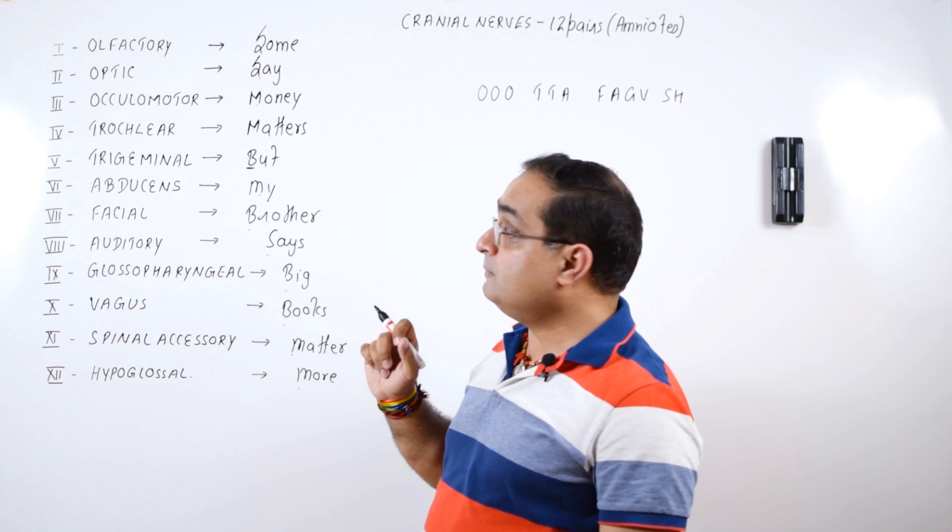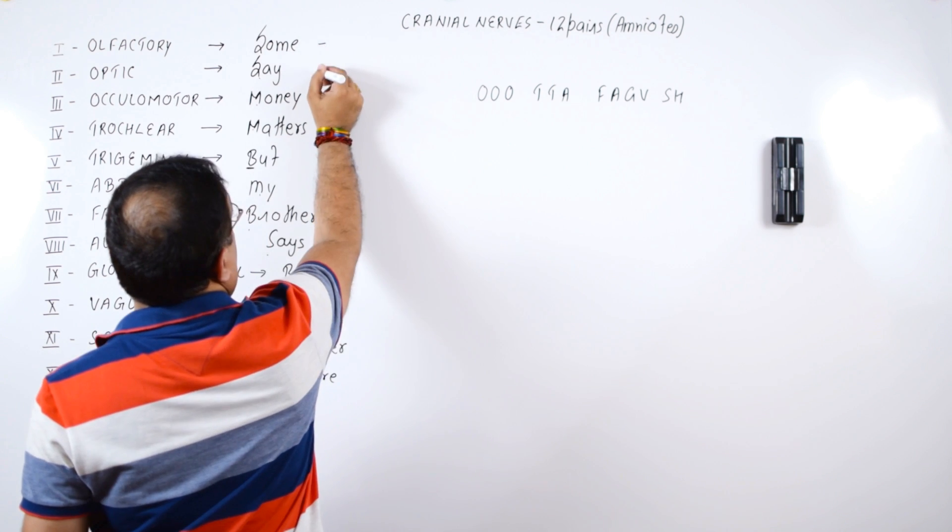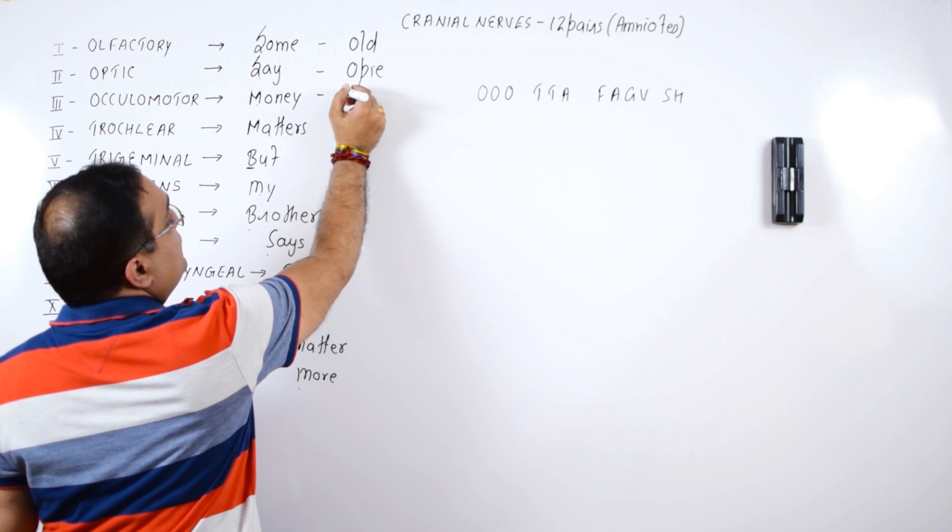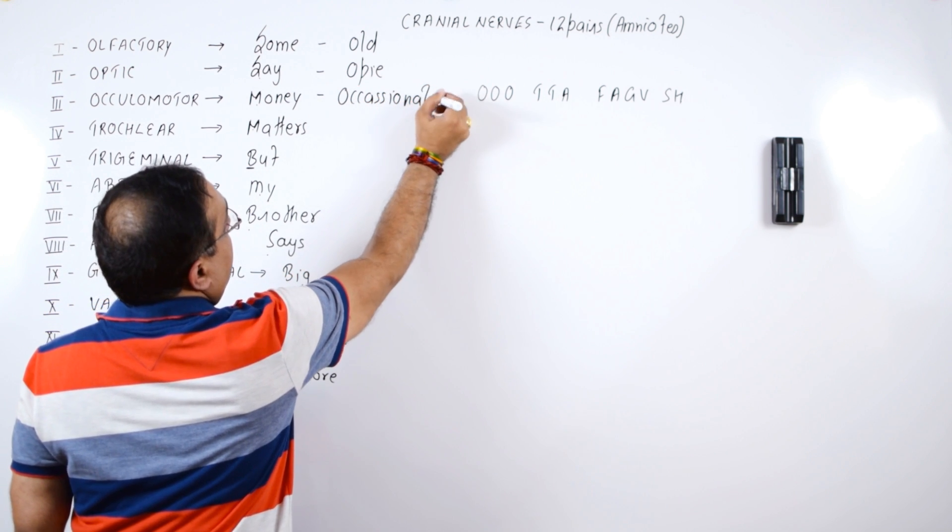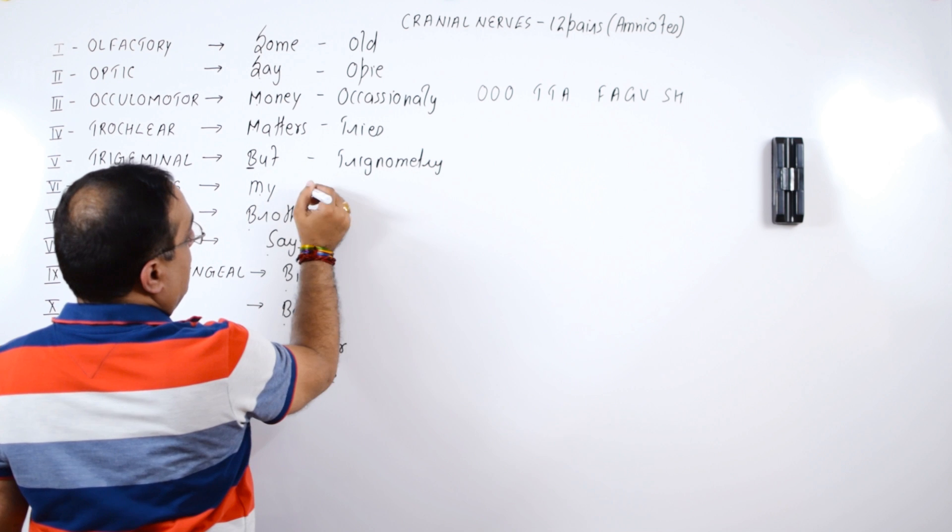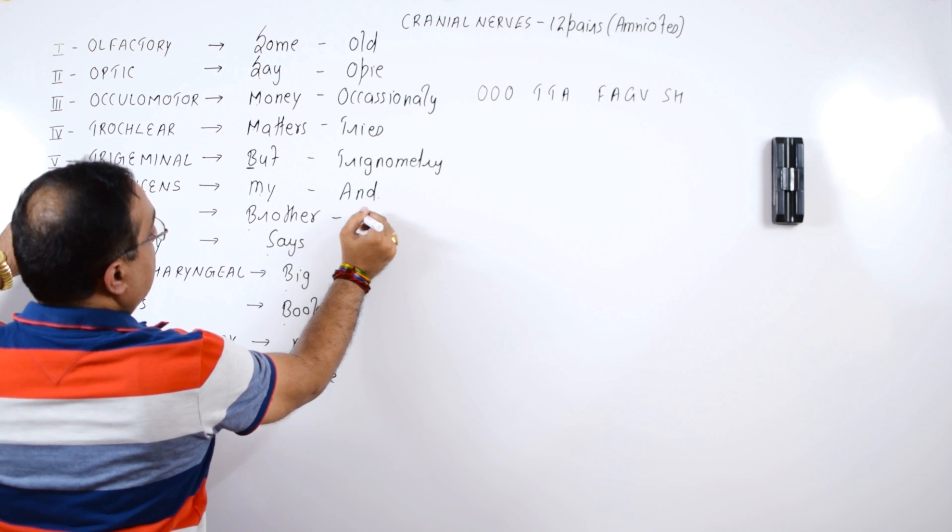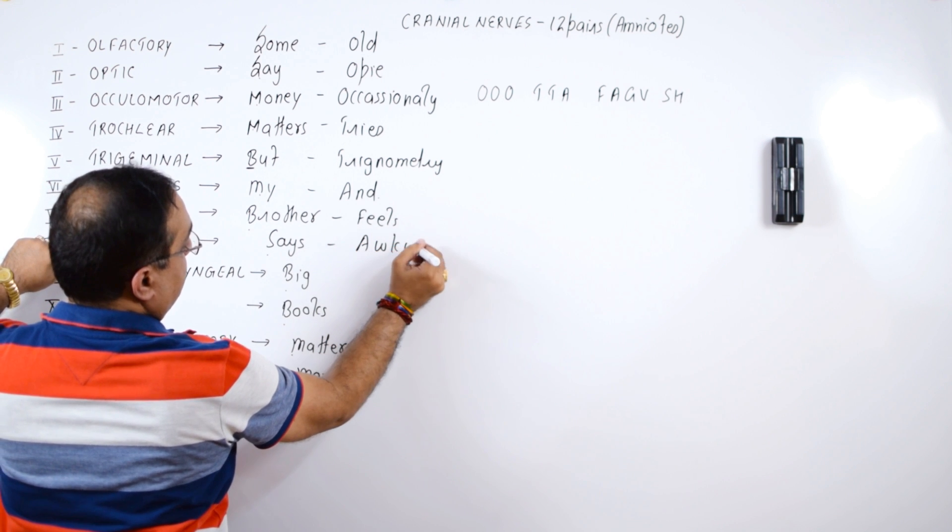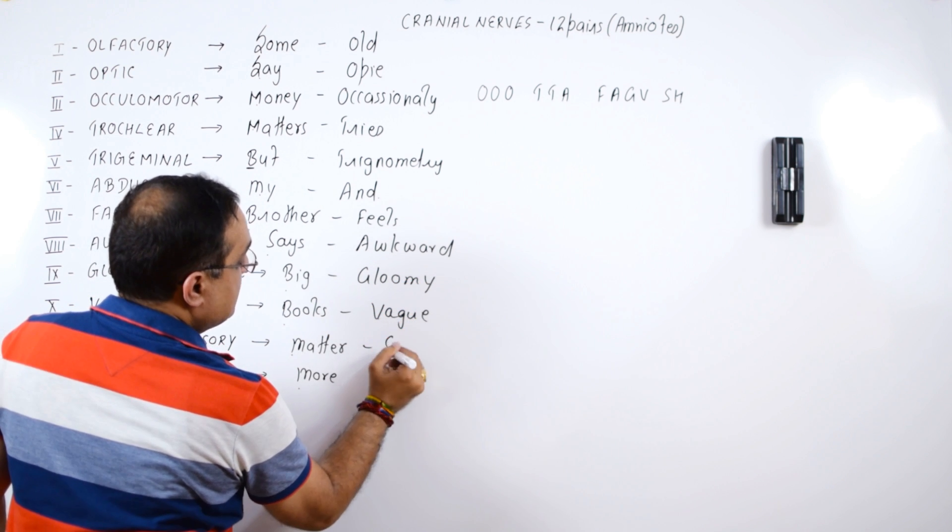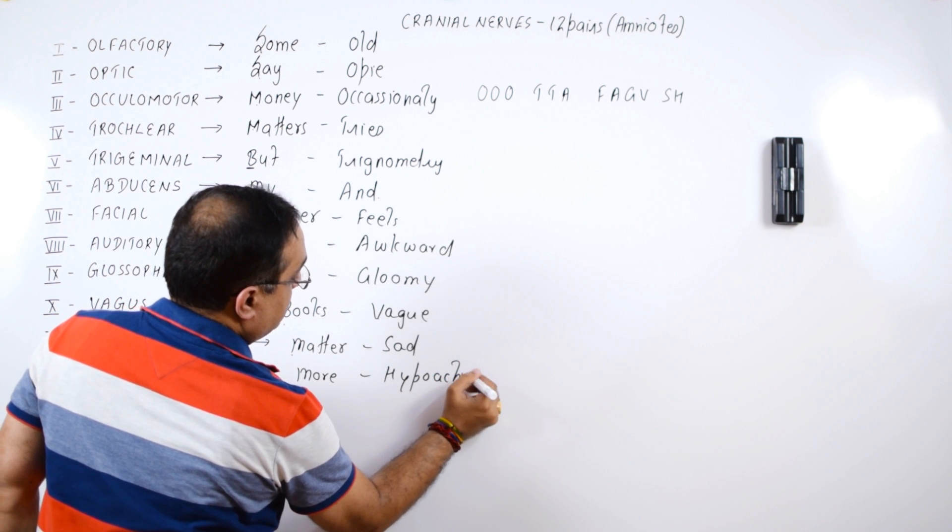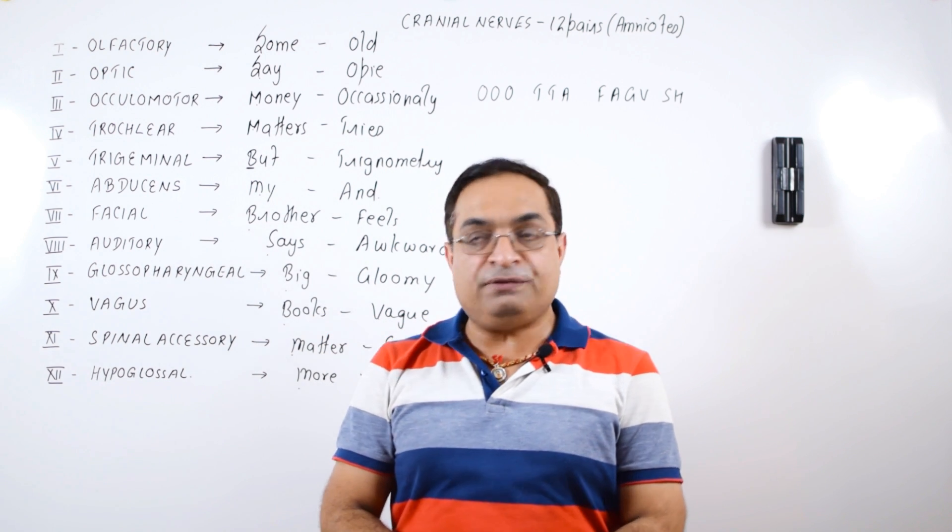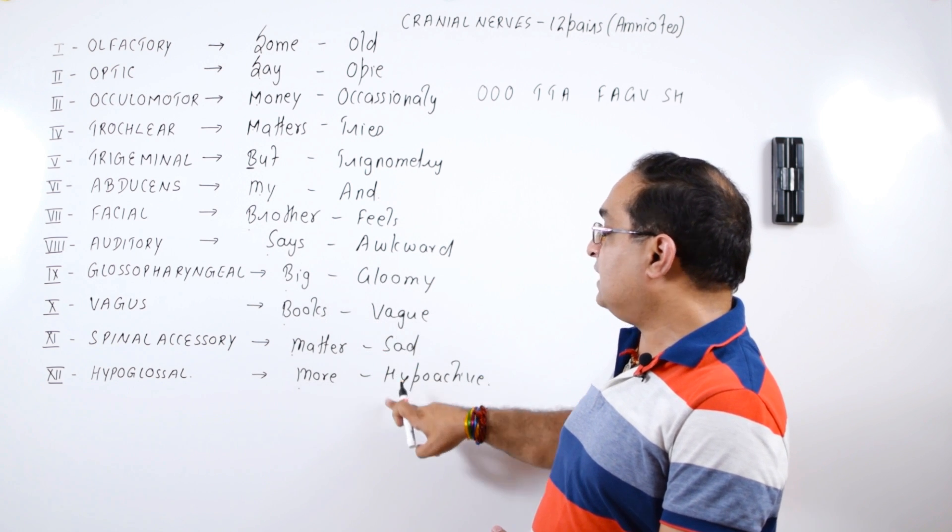Now another mnemonic to remember the names of these cranial nerves. That is: Old OP, let's say that OP is the name of a person. Old OP occasionally tries trigonometry and feels awkward, gloomy, vague, sad, hypoactive.